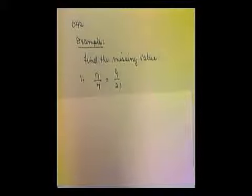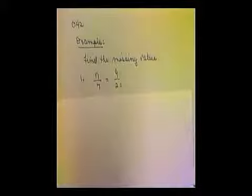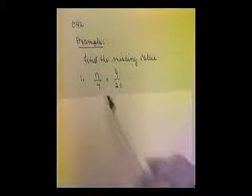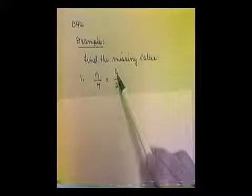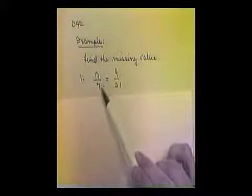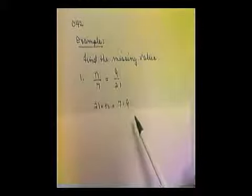Let's look at an example. We want to find the missing value of this proportion. We have n over 7 equals 9 over 21. I want to find the value of n. To do this, what I'm going to do is find the cross products and set them equal to each other. So we're going to multiply 21 times n and put that equal to 7 times 9.